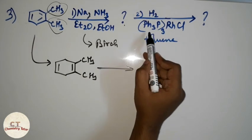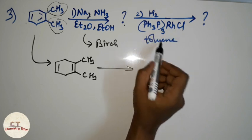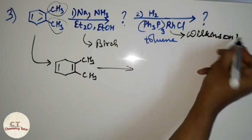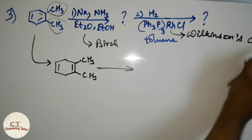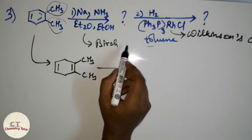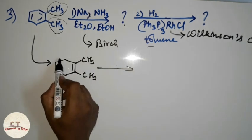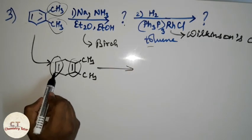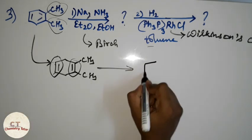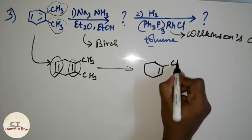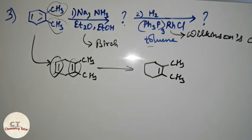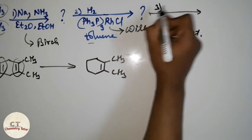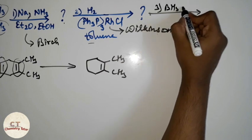In the next step, hydrogen in the presence of triphenylphosphine rhodium chloride — this is Wilkinson's catalyst — in toluene. Wilkinson's catalyst selectively undergoes hydrogenation of the less substituted alkene compared to the more substituted alkene. So it will hydrogenate the less substituted double bond to give this product.